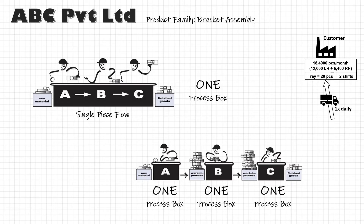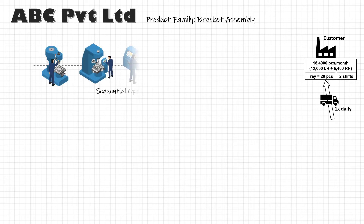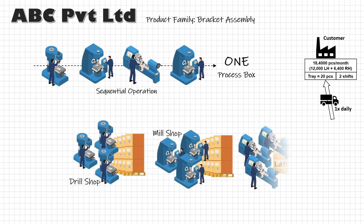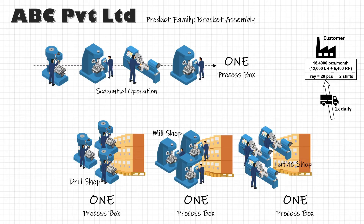Similarly, if there is a machining line of, say, 10 sequential machining operations such as drilling, tapping, etc., connected by a transfer line in a kind of single-piece flow, it can be mapped as a single process box. But if there are separate machining sections or areas — like a drilling shop and tapping shop — with inventory being moved in batches, then each shop will get its own process box.